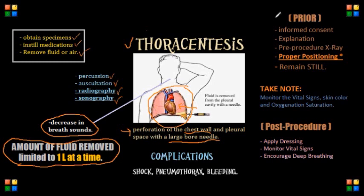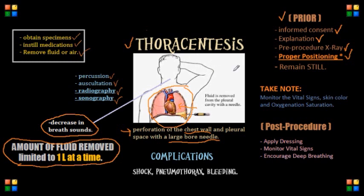Now let's go over the most important things for the exam — the prior interventions before the procedure. You as the nurse need to ensure that informed consent has been obtained, and you're going to be providing additional explanation to the client and to the family. You also need to obtain the pre-procedure x-ray as prescribed to locate the actual pleural effusion and to determine the insertion site for the needle. Positioning is very important. We position the client sitting upright with arms and shoulders raised and supported on pillows. We instruct the client to remain absolutely still because of the risk of accidental needle damage.